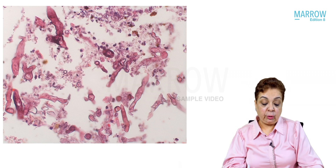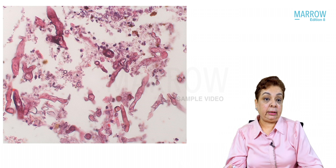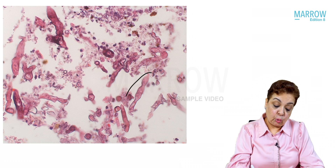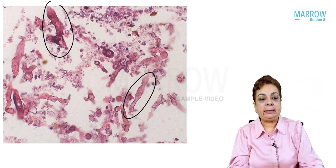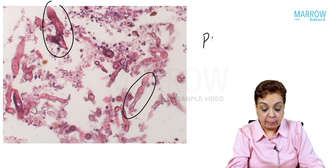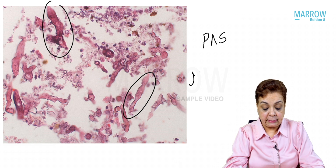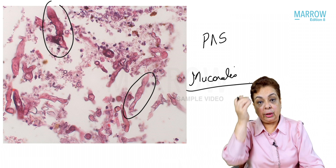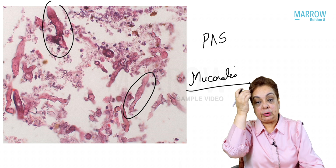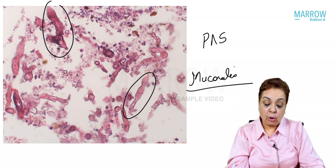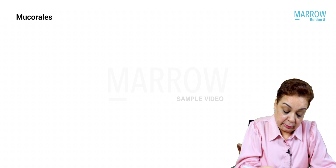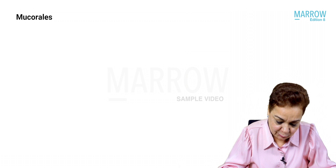Looking at this image, you can see broad hyphae with no visible septations. This is the PAS stain, and this represents mucormycosis on biopsy — caused by organisms belonging to the Mucorales order.